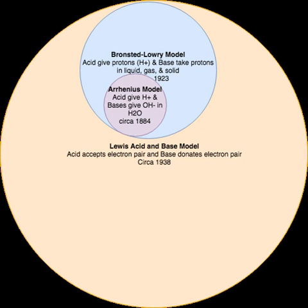In 1963, Ralph Pearson proposed a qualitative concept known as the Hard and Soft Acids and Bases (HSAB) Principle, later made quantitative with help of Robert Parr in 1984. Hard applies to species that are small, have high charge states, and are weakly polarizable. Soft applies to species that are large, have low charge states, and are strongly polarizable. Acids and bases interact, and the most stable interactions are Hard-Hard and Soft-Soft. This theory has found use in organic and inorganic chemistry.